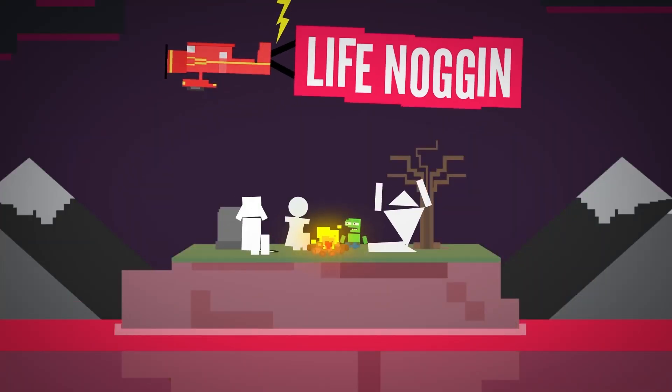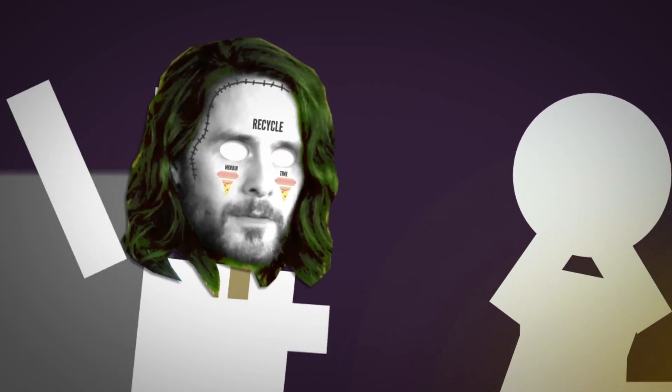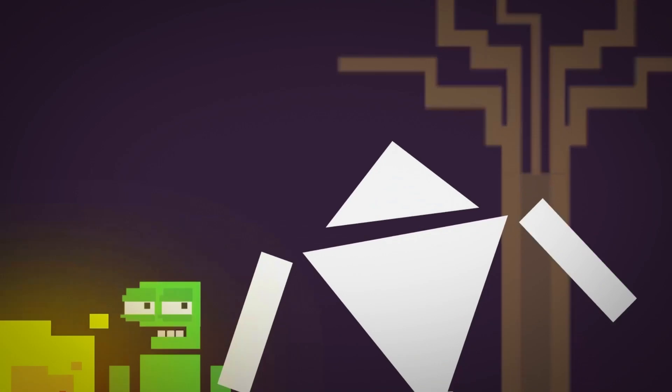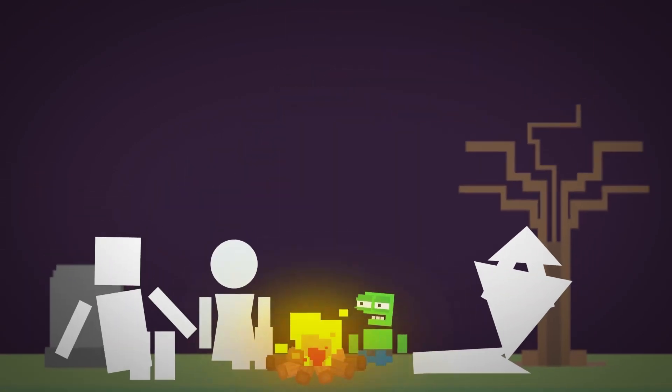Hey there! Welcome to Death Noggin. And then the Joker said, we live in a society. Oh, don't freak out, Triangle Bob.